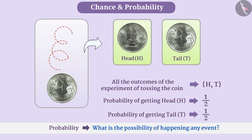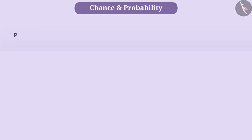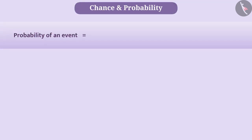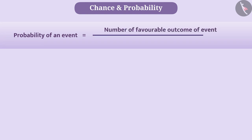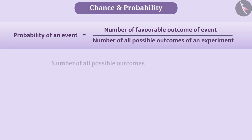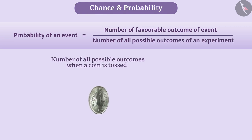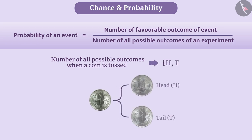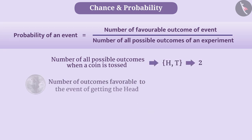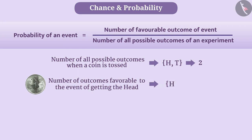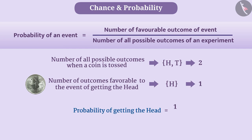In standard form, probability of an event is equal to the number of favorable outcomes of the event divided by the number of possible outcomes of an experiment. For example, the number of all possible outcomes when a coin is tossed is 2, and the number of outcomes favorable to the event of getting a head is 1. So the probability of getting head is 1 by 2.